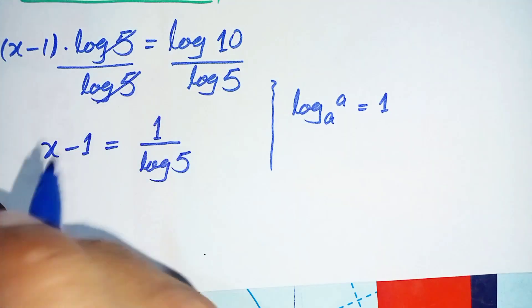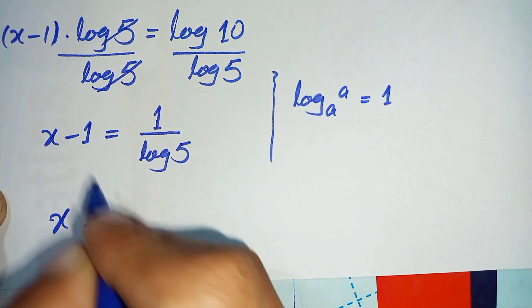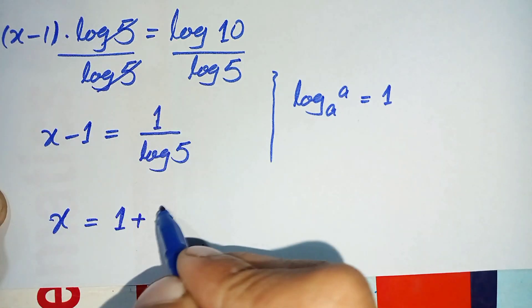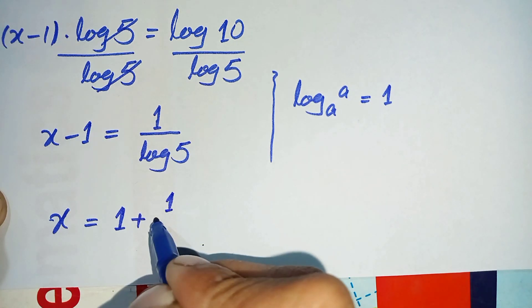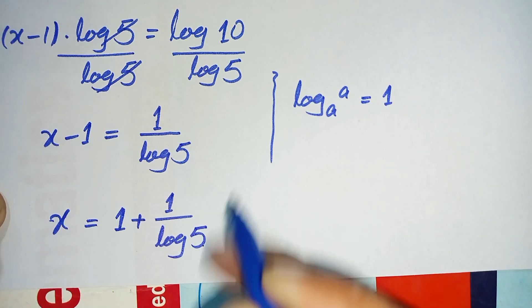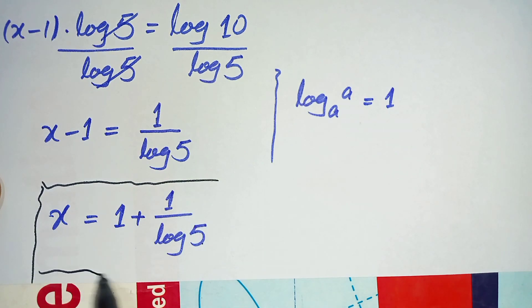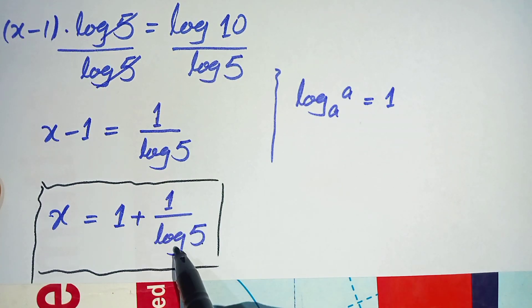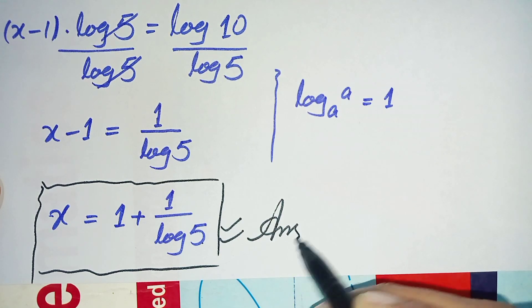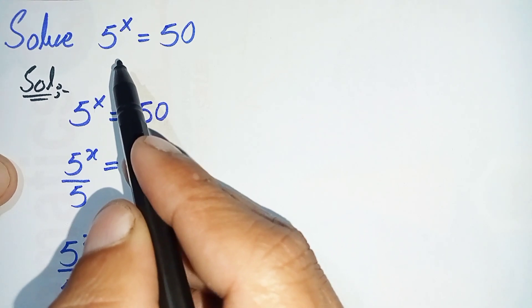Finally, we shift the minus 1 to the right hand side, so the value of x becomes x is equal to 1 plus 1 over log 5. This is the answer and solution of this exponential math problem.